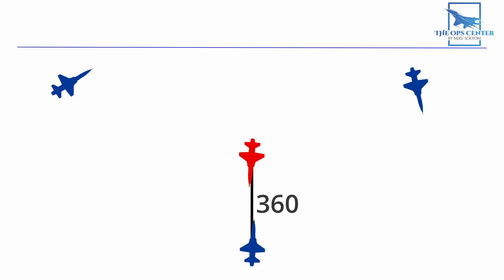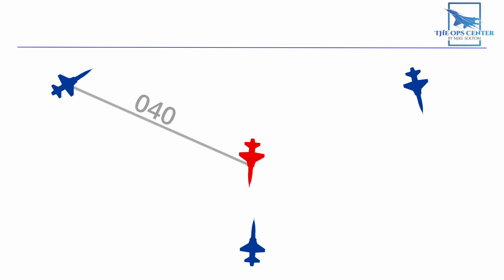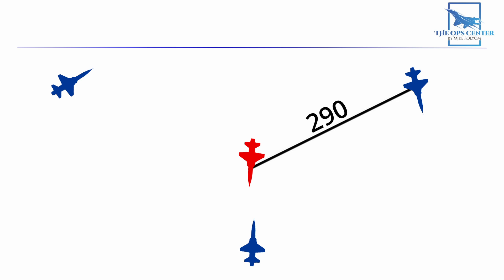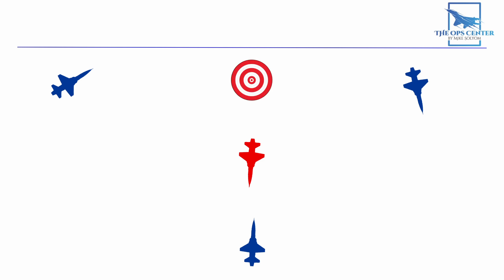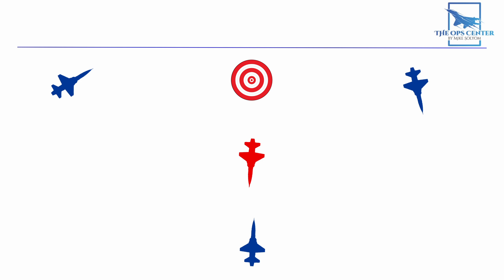In this example, the target is at a magnetic bearing of 360 from this fighter, but it would be at 040 for this one and 290 for this one. So if a controller wanted to pass on the target's location to all three, then three separate BRA calls would be needed. That's why bullseye is the primary method — only one radio call has to be made to get everyone on the same page. But there are some special situations where a BRA call is mandatory: if the information is only for one aircraft, or is a direct response to specific requests.